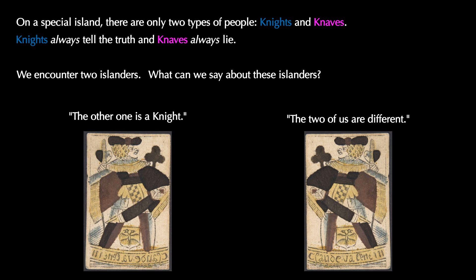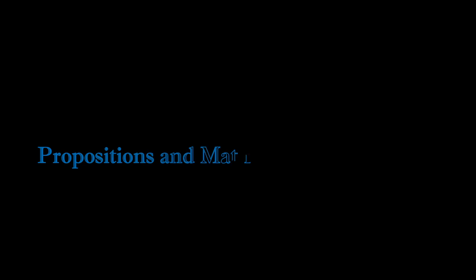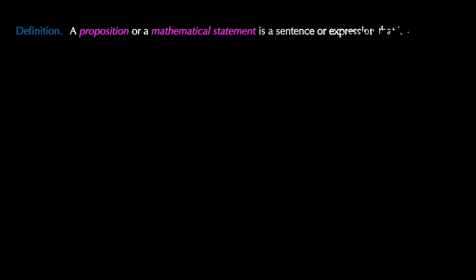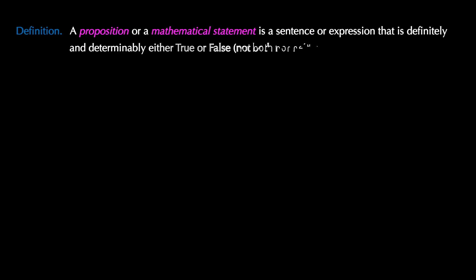Pause the video and think about this. To make sense of knight and knave problems, we're going to learn about mathematical propositions or mathematical statements. A proposition or a mathematical statement is a sentence or expression that is definitely and determinably either true or false, but not both nor neither.